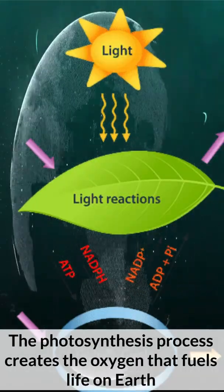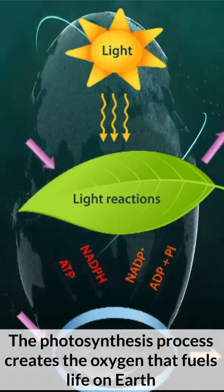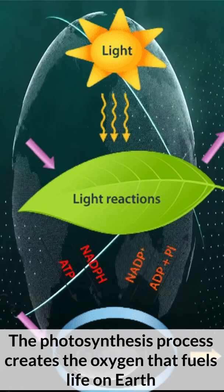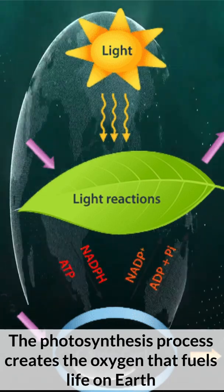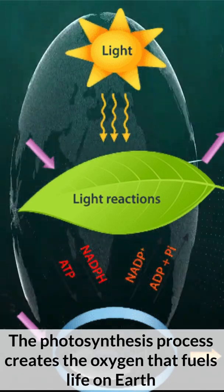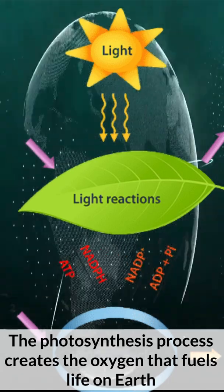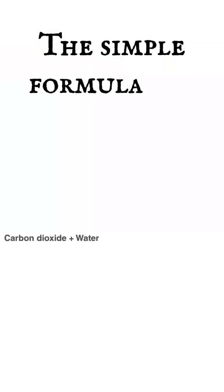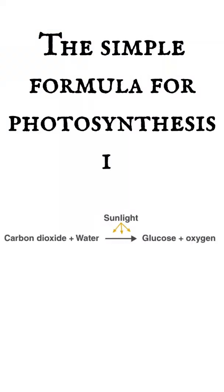4. The photosynthesis process creates the oxygen that fuels life on Earth. 5. The simple formula for photosynthesis is: carbon dioxide plus water plus sunlight equals sugar plus oxygen.